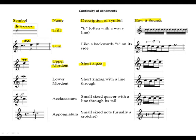Upper mordent: short zigzag, and this is how it sounds when played. Lower mordent: short zigzag with a line through, the same as upper mordent but with a line through it.